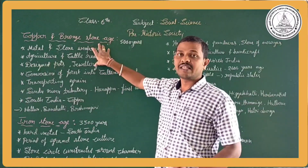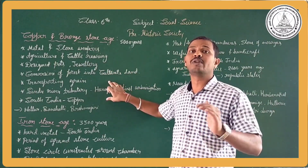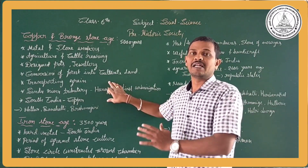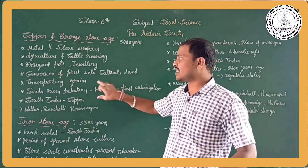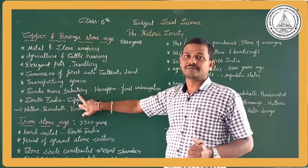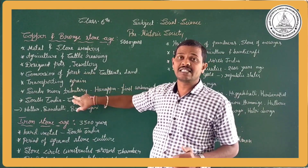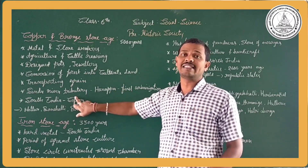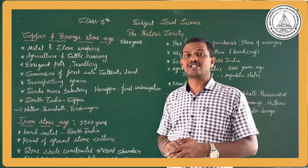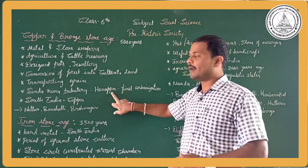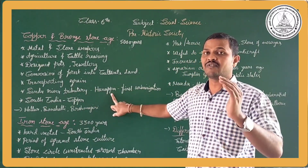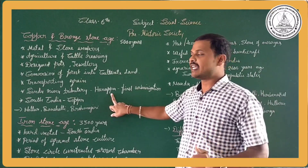In this age they also transported food to other places where people needed it. Some places could not get good crop conditions, so people transported food from one place to another. This copper and bronze age is especially associated with the Sindhu river tributaries, where we found one of the first civilizations — the Harappa civilization. Many historians and scientists provide information about it as one of the first urbanization civilizations.